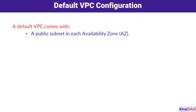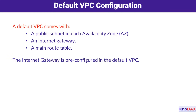When you create an AWS account, AWS provides a default VPC in each region. This default VPC comes pre-configured with a public subnet in each availability zone, an Internet Gateway, and a main route table. These configurations allow resources in the default VPC to access the Internet right away.